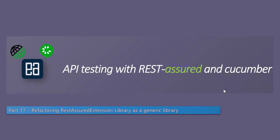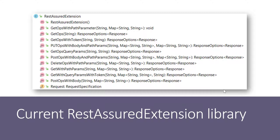We are now going to be doing a complete code refactoring of our REST Assured extension library that we have been writing so far in this course. You can see that our current code has grown quite large, and some methods like get ops with path param, get ops, or get ops with token are not even being used. Some are obsolete, and methods like post ops with param that we wrote recently actually have an authentication token within themselves.